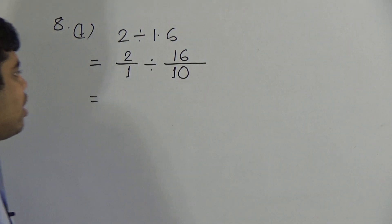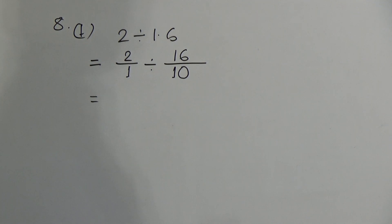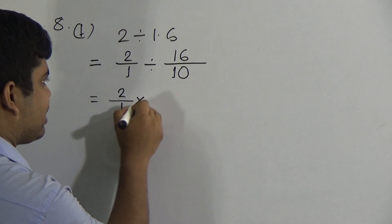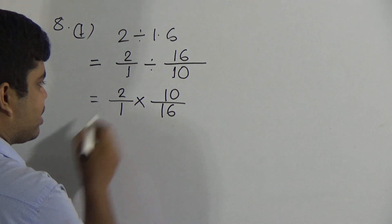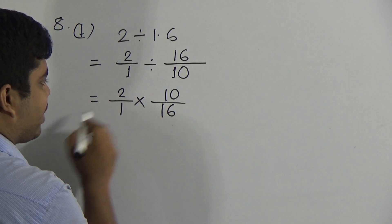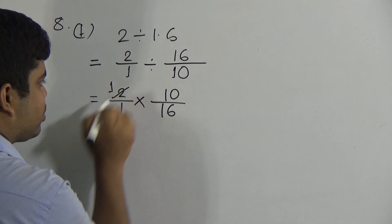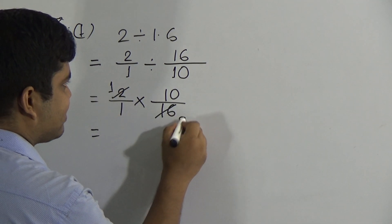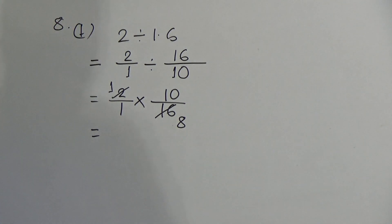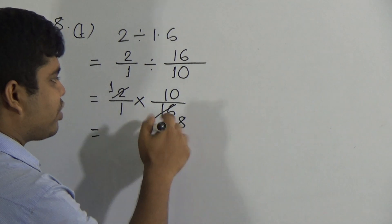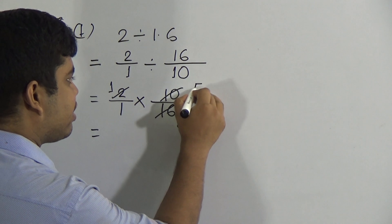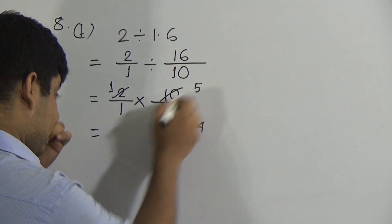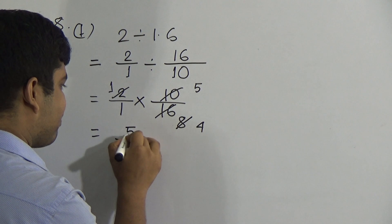Division of two fractions means multiplication of the first fraction with the reciprocal of the second fraction. That means 2/1 multiplied by 10/16. Now notice: 16 is cut by 2 — 2 ones are 2 and 2 eights are 16. Again 10 and 2 are both cut by 2 — 5 twos are 10 and 4 twos are 8. Now it becomes 5/4.